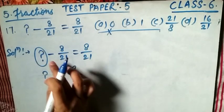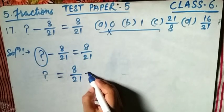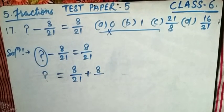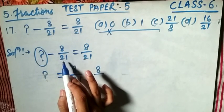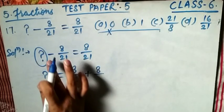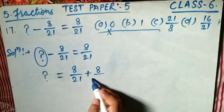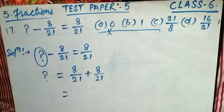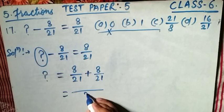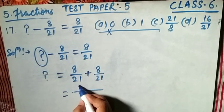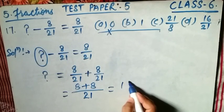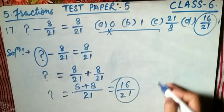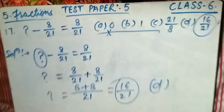Bring the minus 8/21 to the right-hand side by transposition, changing its sign to positive. Now the right-hand side becomes 8/21 plus 8/21. These are like fractions, so write the single denominator 21 and add the numerators: 8 plus 8 equals 16. The answer is 16/21, which is option D.